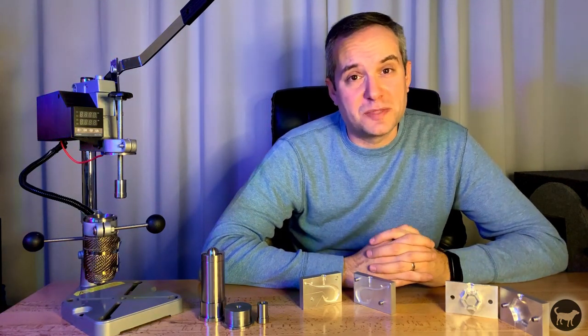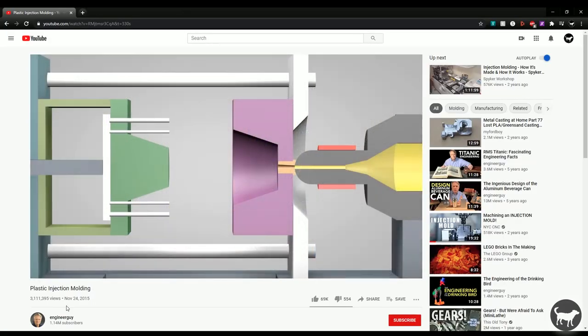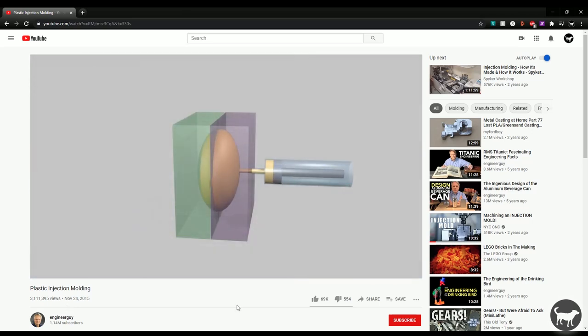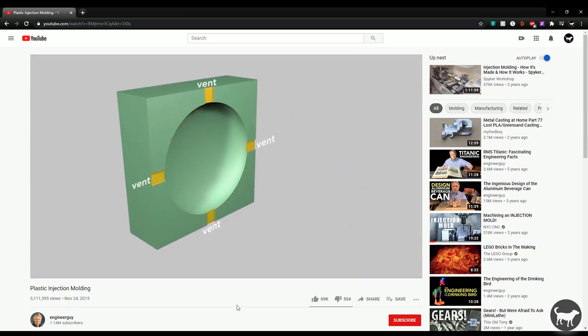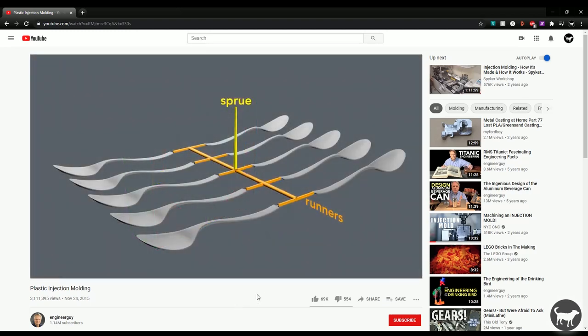First thing I would recommend is Bill Hammack's video on plastic injection molding for the most basic explanation of the injection molding process. He does an amazing job explaining how a modern injection machine works, but also explains things like what the different parts of the mold are called, such as sprues, runners,